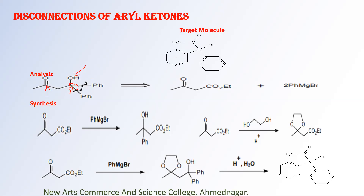We focus on the hydroxy functional group. Whenever a hydroxy functional group is there, the next question is: what type is this hydroxy group? What is the specificity of this hydroxy group? The specificity is that it is a tertiary hydroxy group. Whenever a tertiary hydroxy group is there, you always prefer the retro-Grignard reaction. Retro-Grignard means the hydroxy group acts as a guiding functional group. The different possible disconnections are: disconnect this bond, this bond, or this bond.